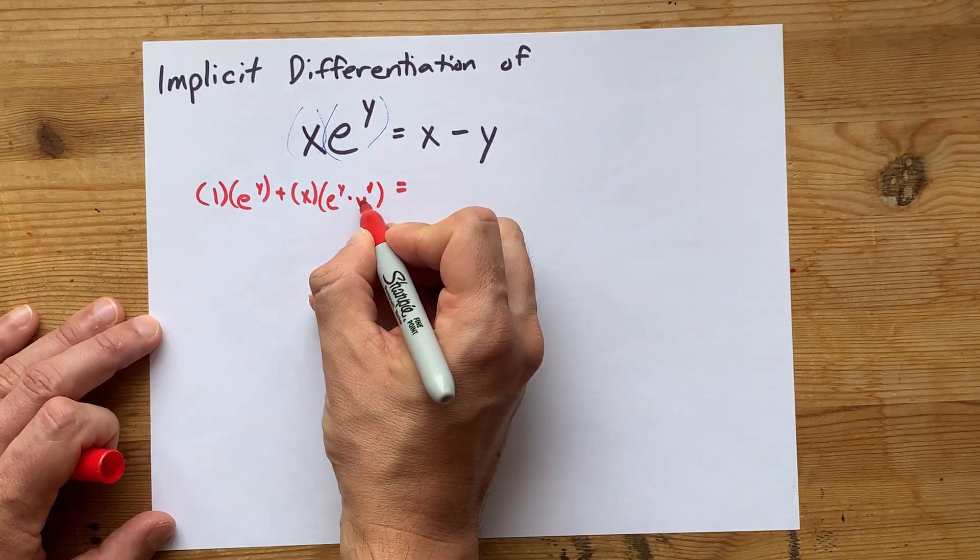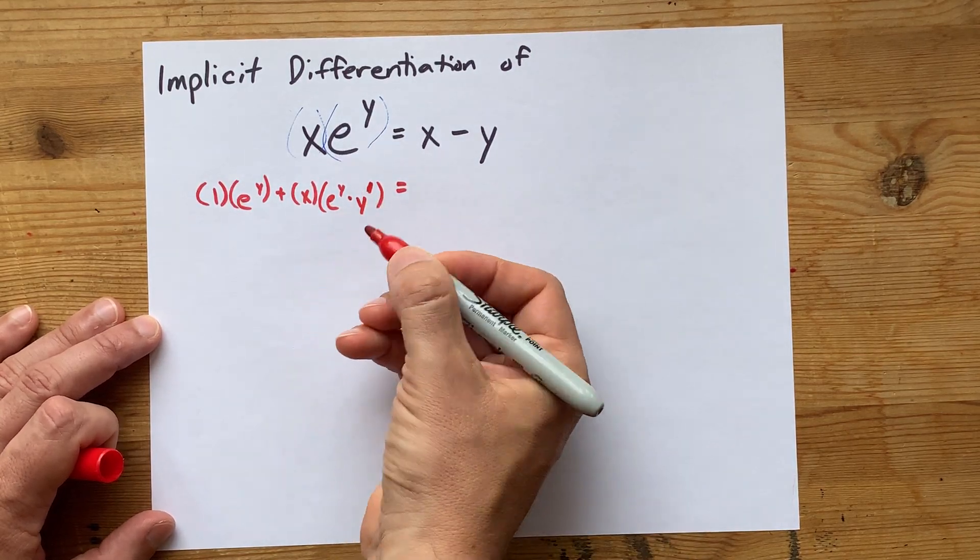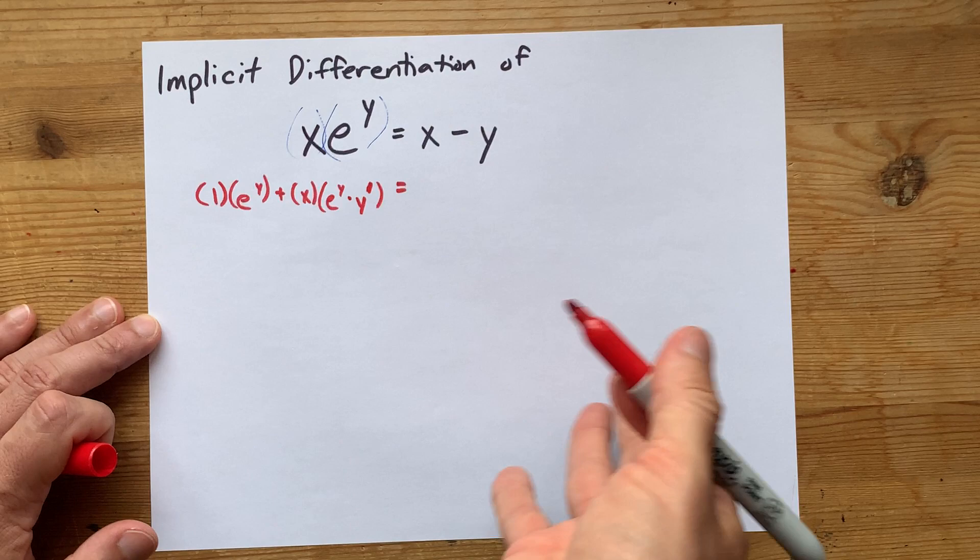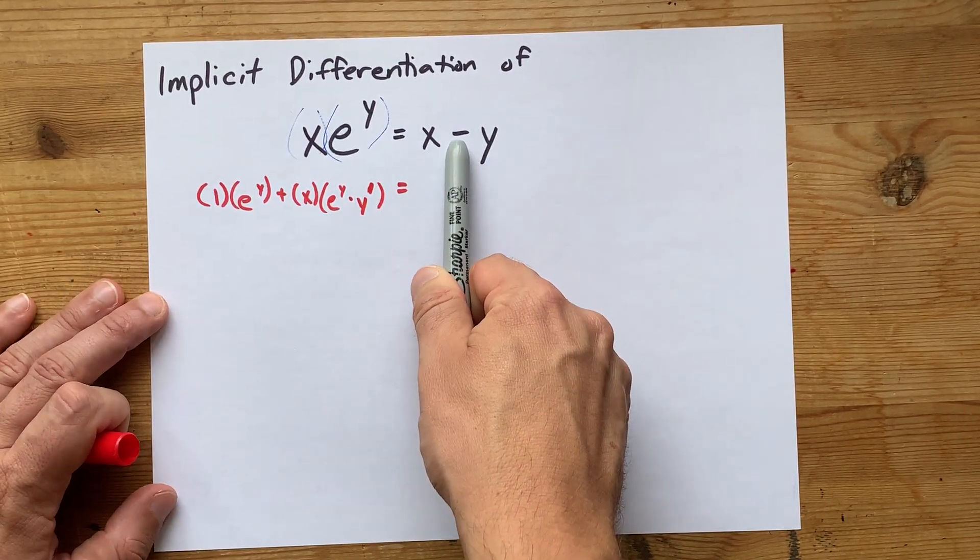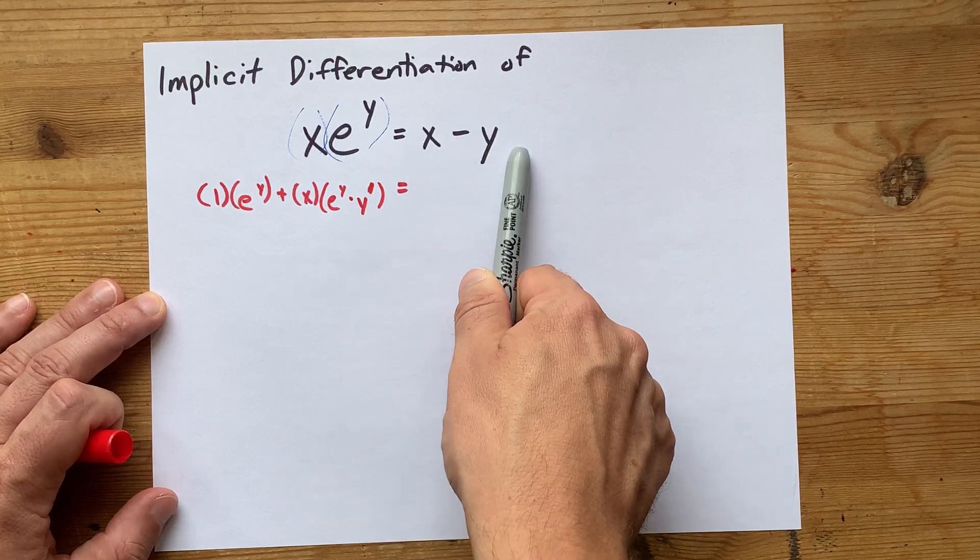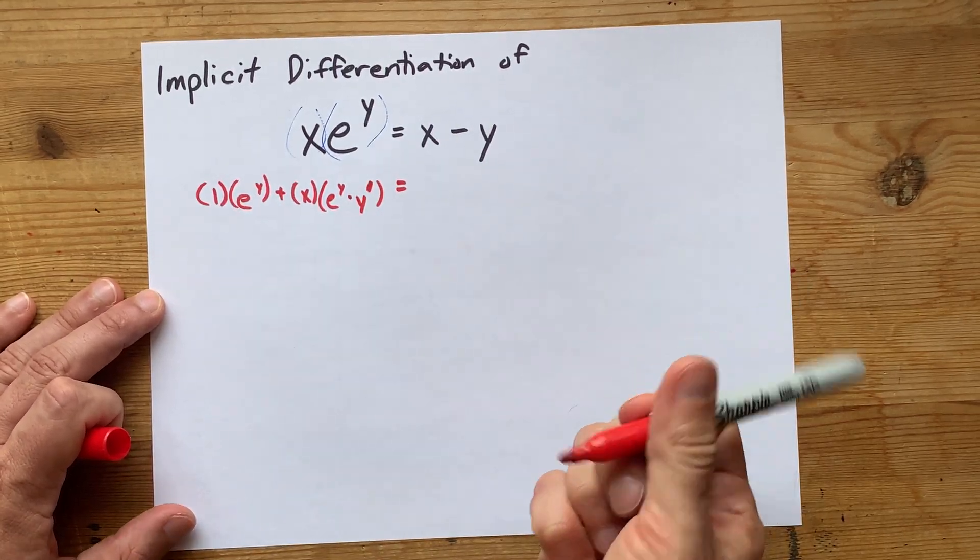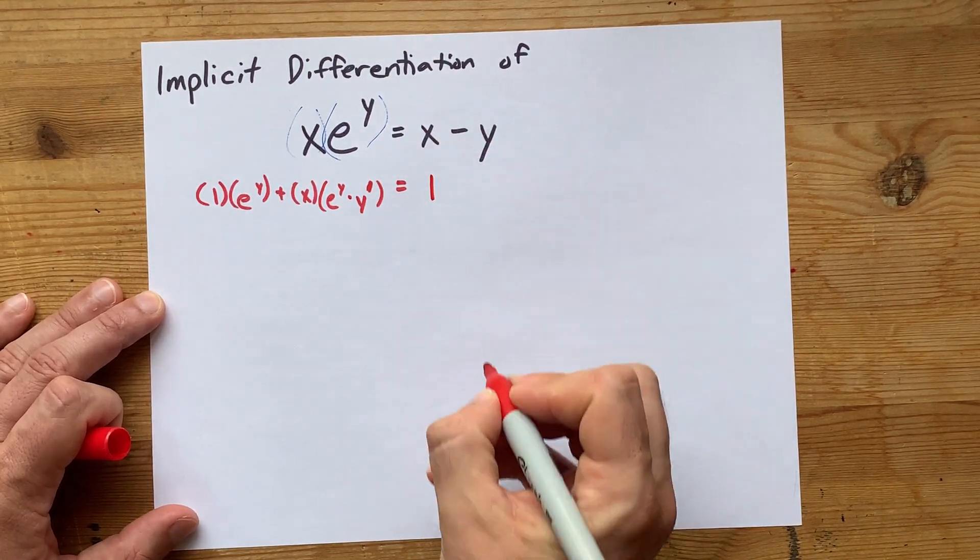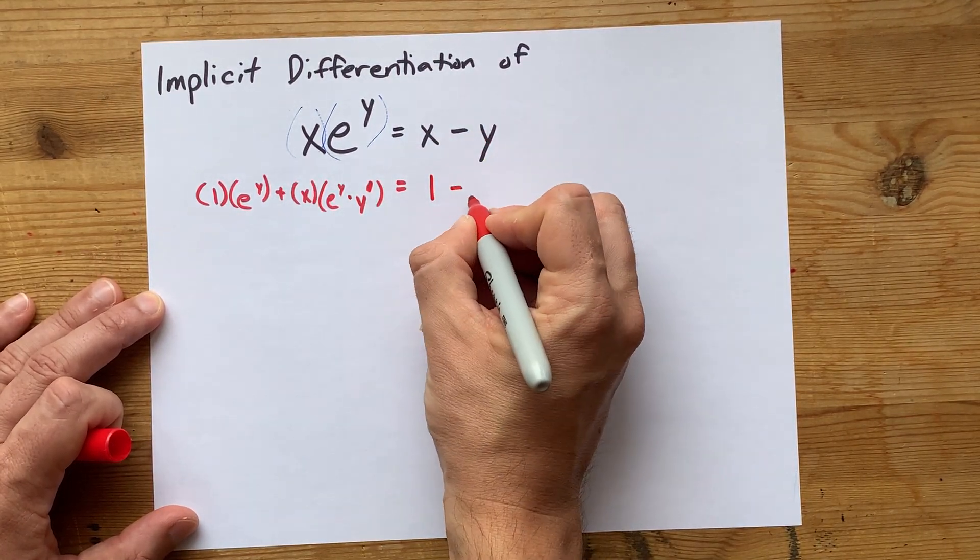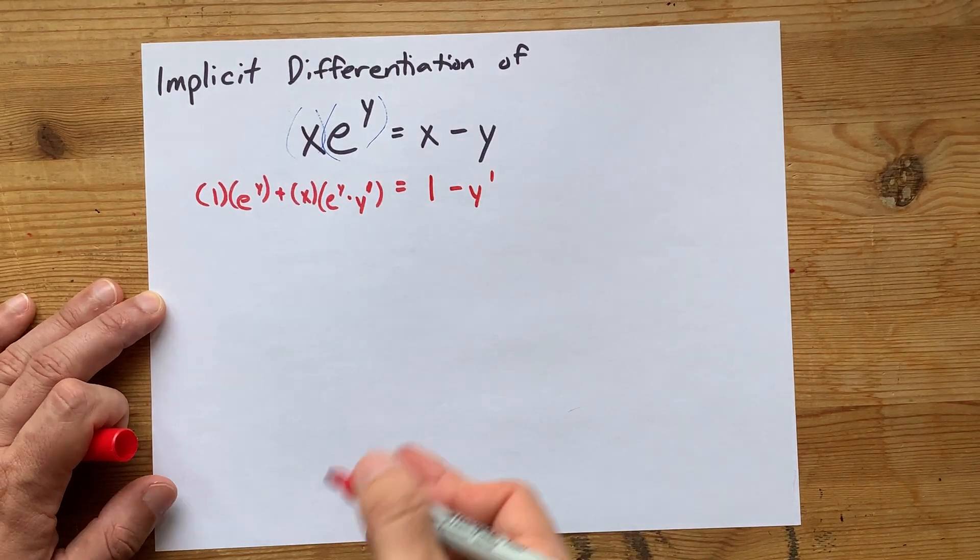Your teacher may prefer dy by dx instead of y prime, but those are just two different ways to write the same thing. On the right-hand side, we have a minus sign, so these are two separate terms. We can differentiate them each separately. The derivative of x is 1. The derivative of y is simply y prime.